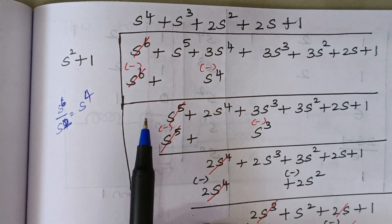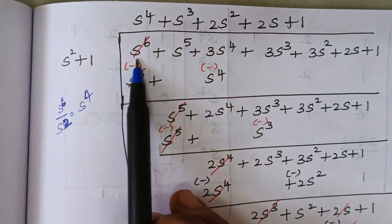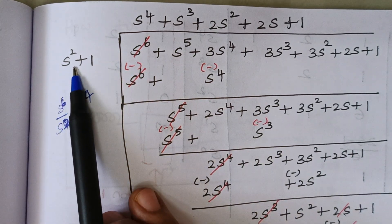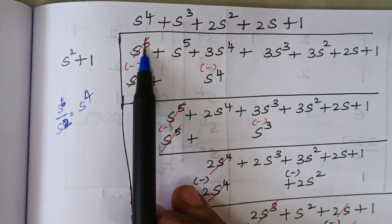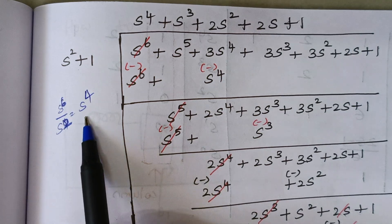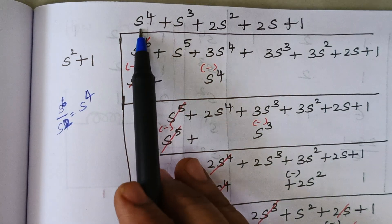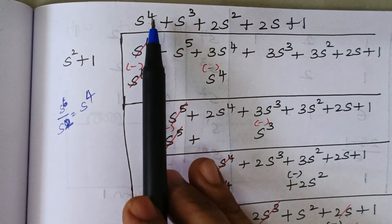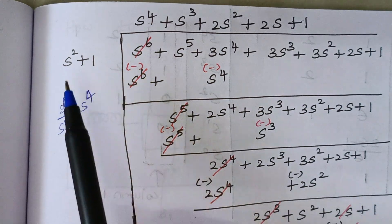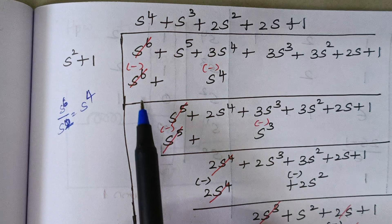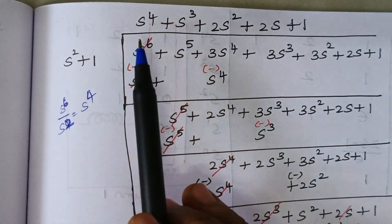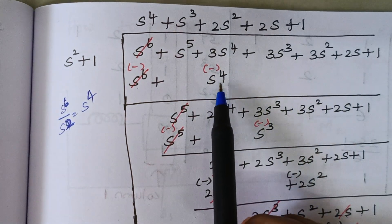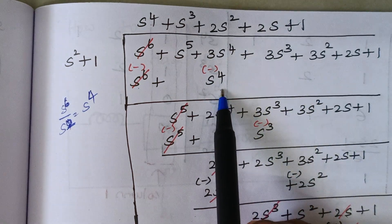Now we are going to divide. We have to take the first term of the characteristic equation and first term of the auxiliary equation and divide those two. That is S to the power 6 divided by S to the power 2 gives you S to the power 4. So the first term is S to the power 4. Then multiply S to the power 4 with S squared plus 1: S² × S⁴ gives S⁶, and 1 × S⁴ gives S⁴, which I am writing under S⁴ of the characteristic equation.